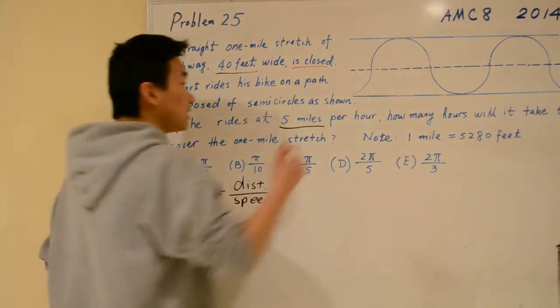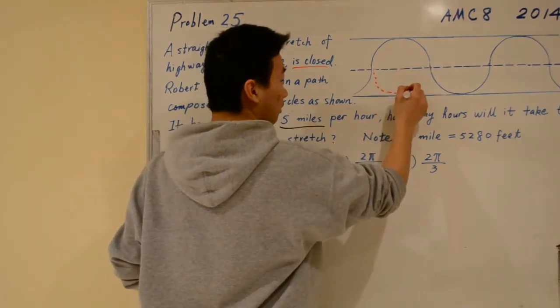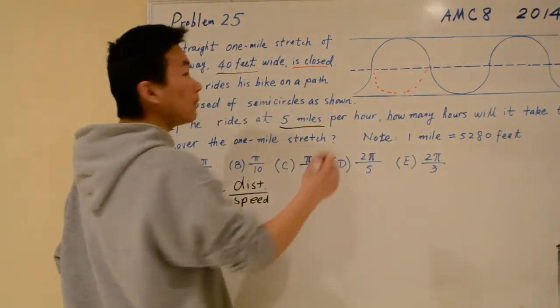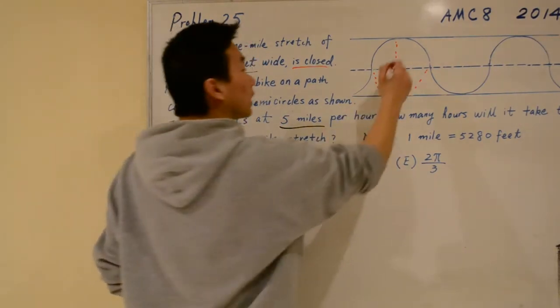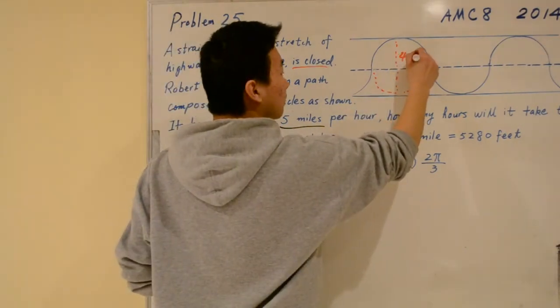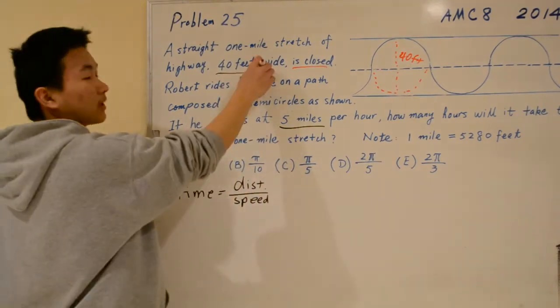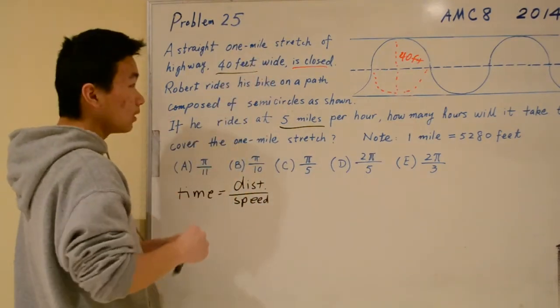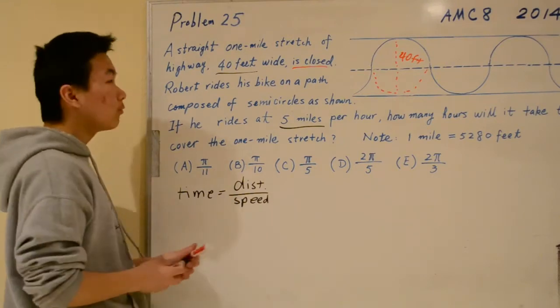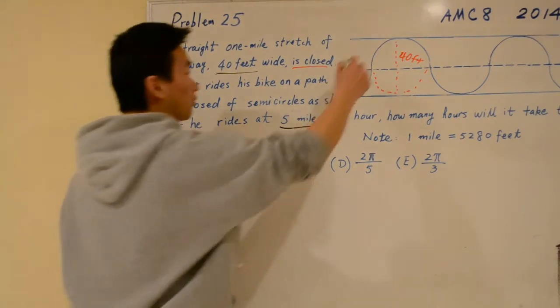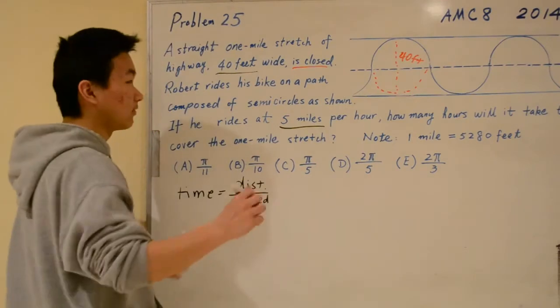If we complete the semi-circle right here, the diameter is 40 because it's given right here. Now that we know the diameter, we can find the perimeter, the circumference of the circle.